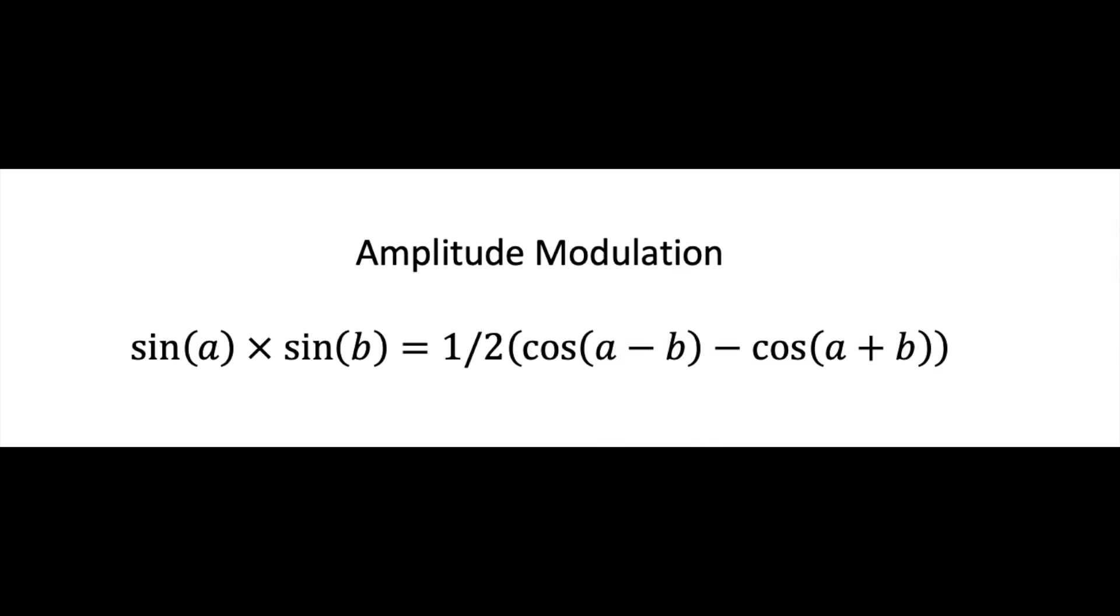See, when you do AM modulation, you do the mathematical equivalent of multiplying two sine waves, the carrier, sine A here, and the modulation, sine B. And according to this trigonometry formula, that generates two other sines, or in this case cosines,